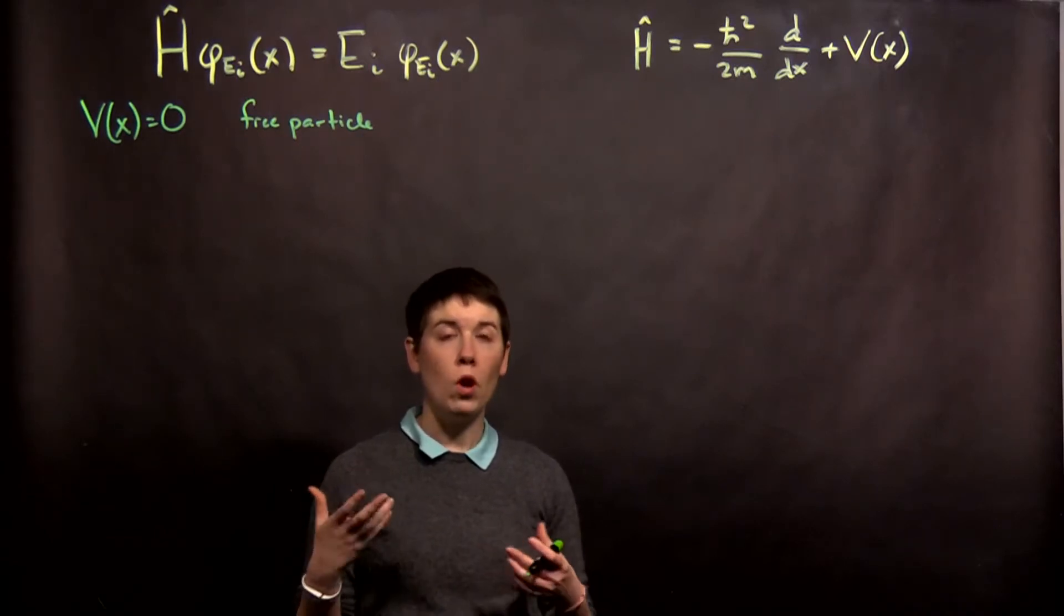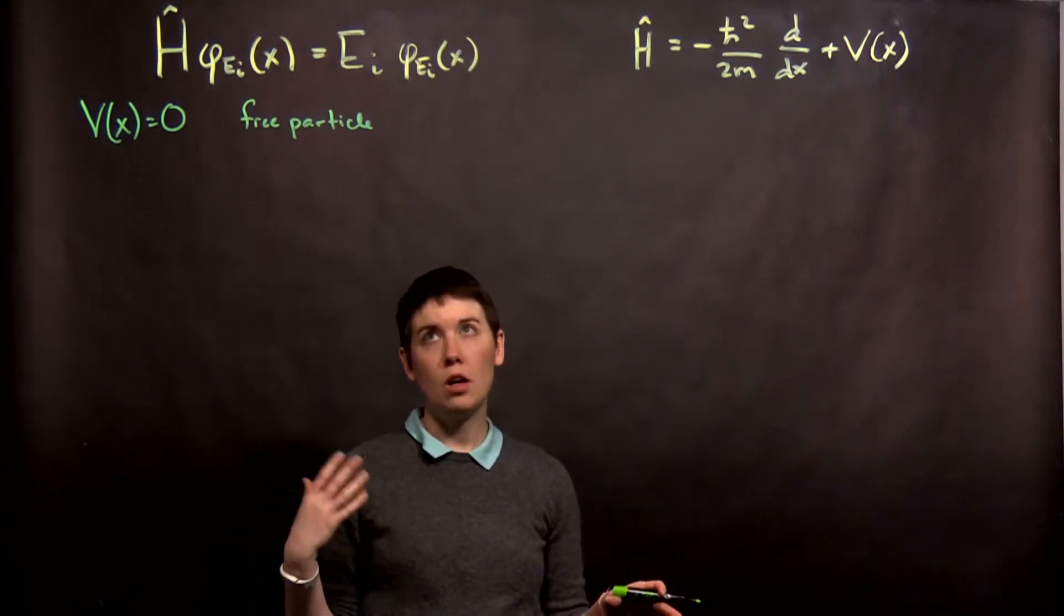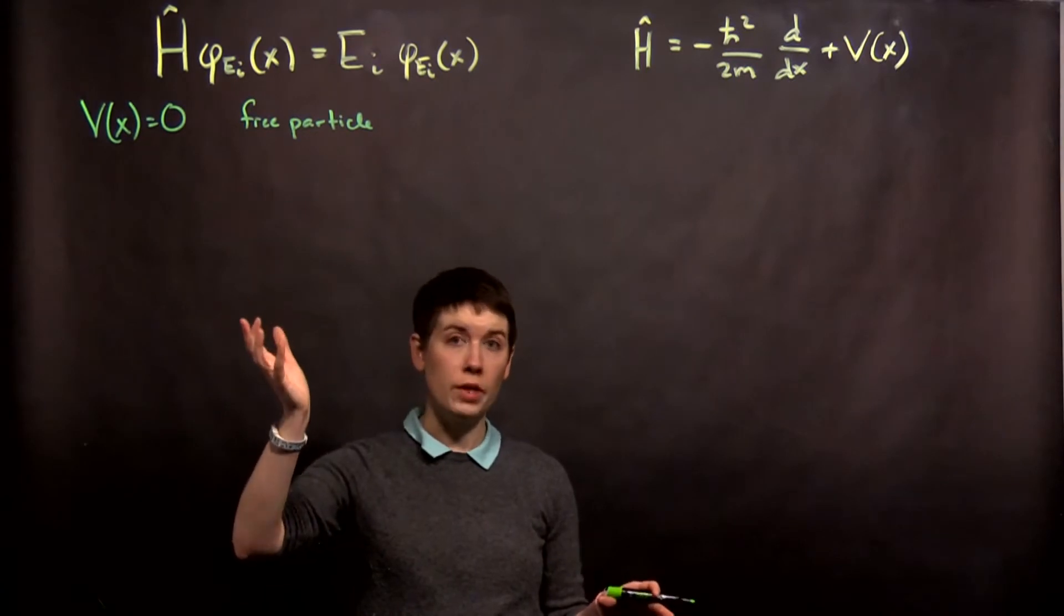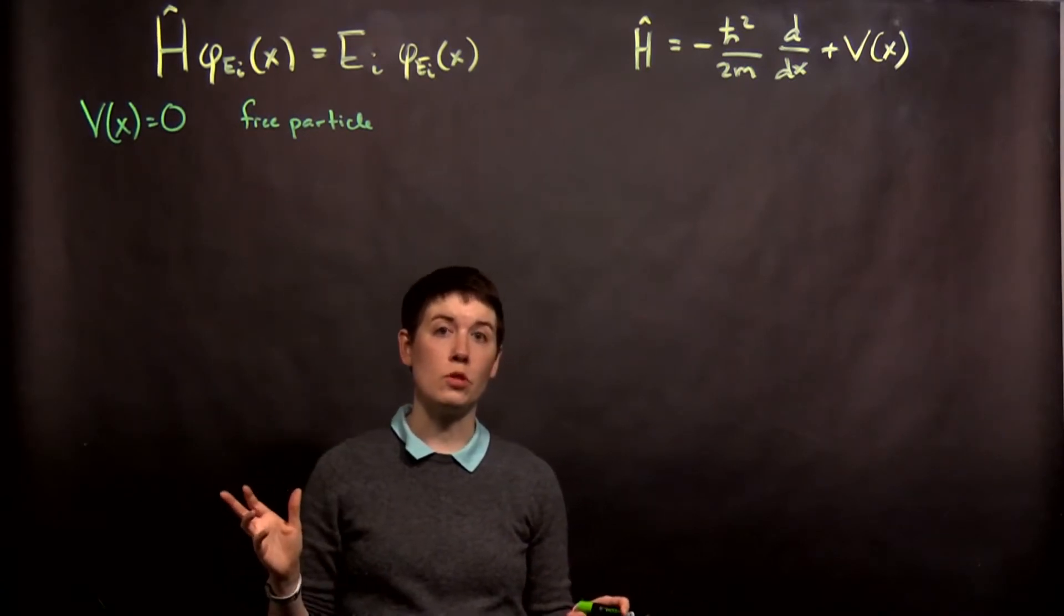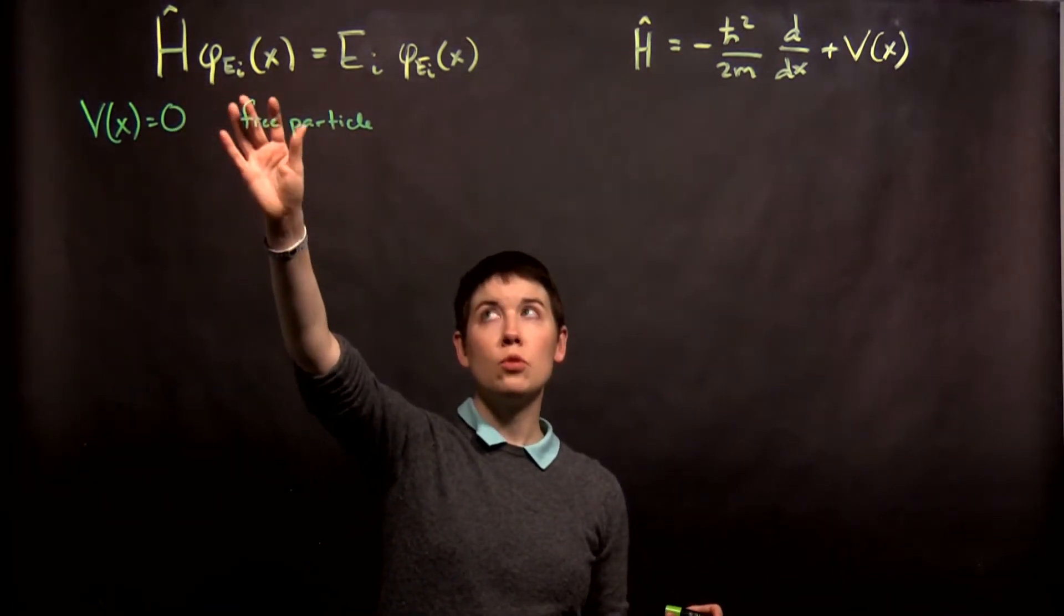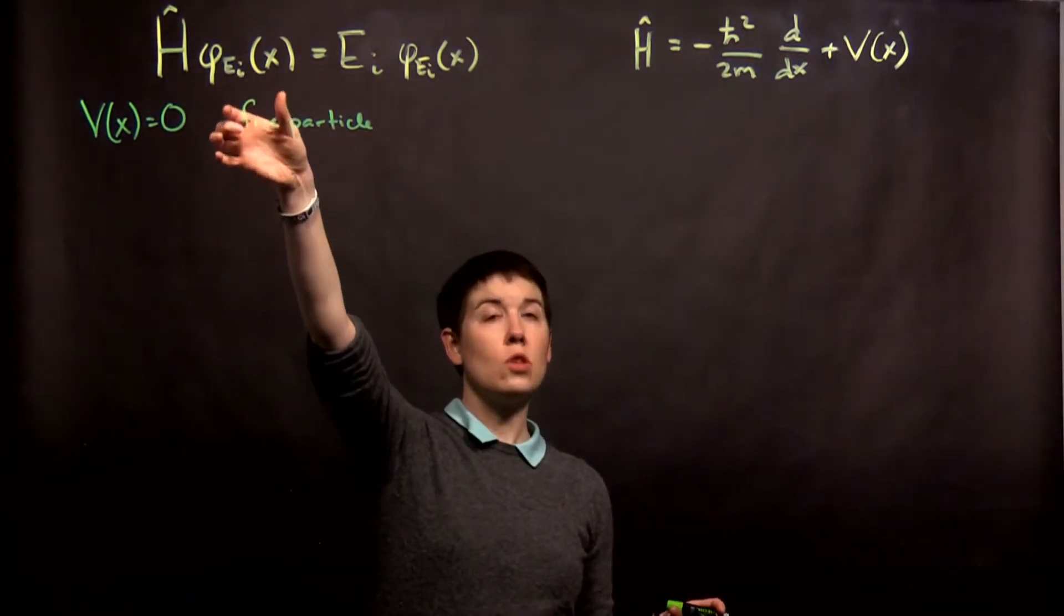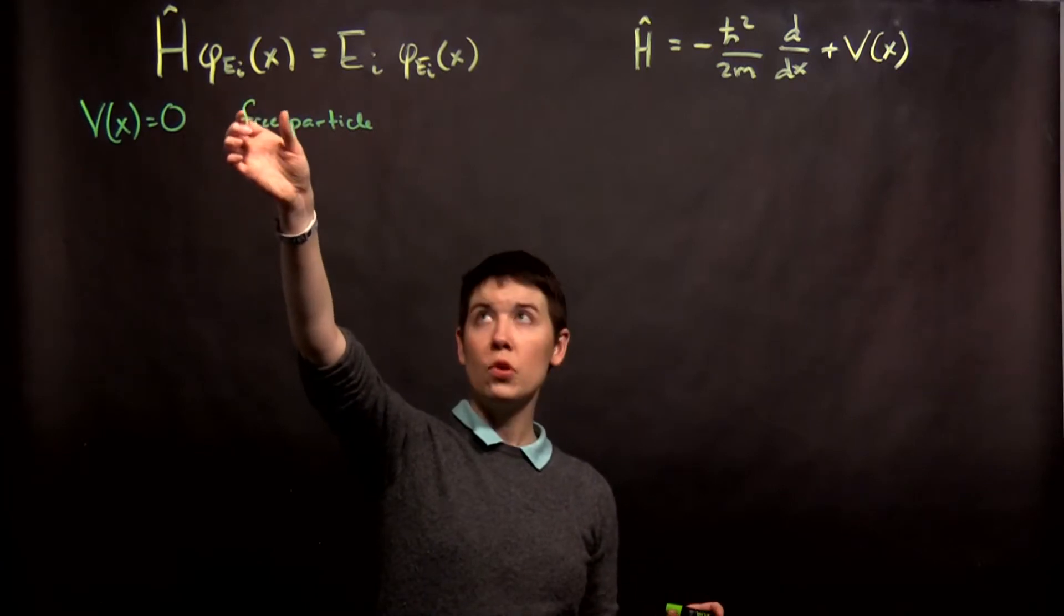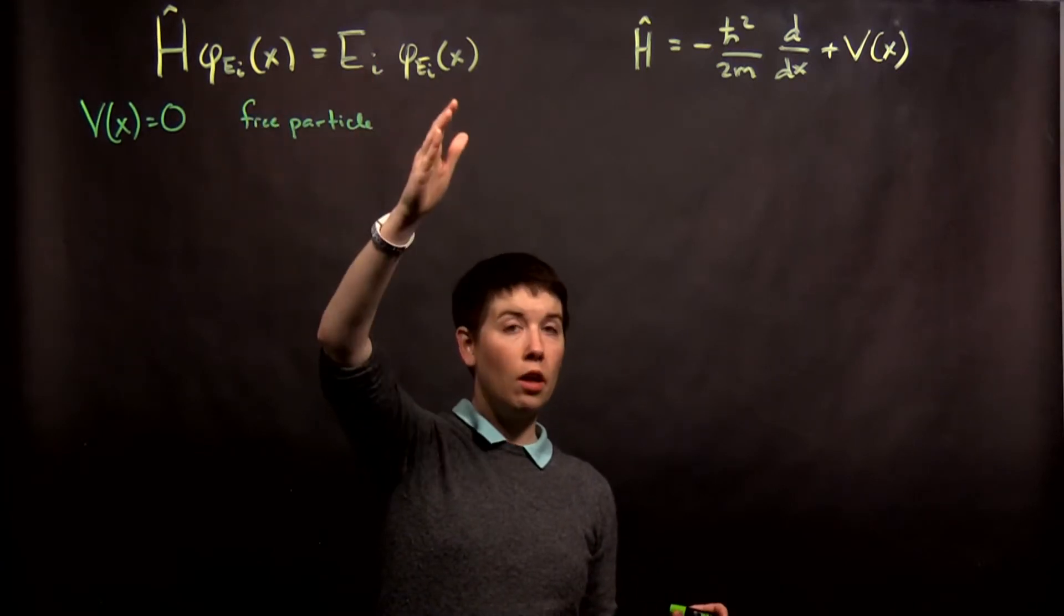Let's start solving one simple example of our energy eigenvalue equation in the position representation. So to remind you we have our operator which will be our Hamiltonian applied to a function and in this case these are our energy eigenfunctions. We'll get a specific energy out and that function back.